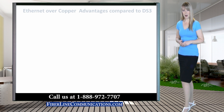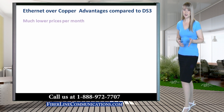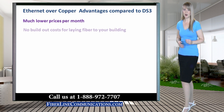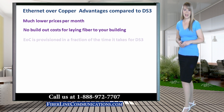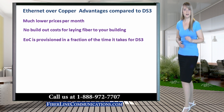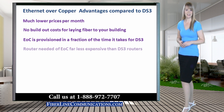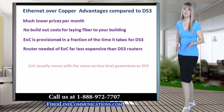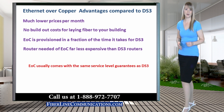Ethernet over Copper offers many advantages over DS3. The price is much lower, and extra build-out costs are usually not necessary for provisioning EOC. Ethernet over Copper can be provisioned in a fraction of the time that it would take for laying the fiber to install a DS3 circuit. The routers required for EOC are far less sophisticated and therefore cost a fraction of what a DS3 router would cost.